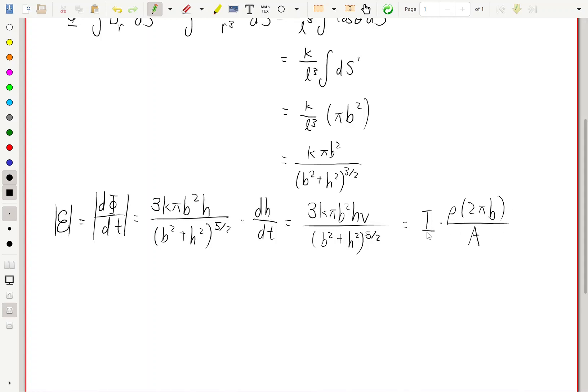Now we can just rearrange and solve for i. We note that the pi can cancel, and we can cancel one of the powers of b with that, and with that we can solve for i to be 3k b h v A over 2 rho times b squared plus h squared to the power of 5 over 2, and that should be our answer.